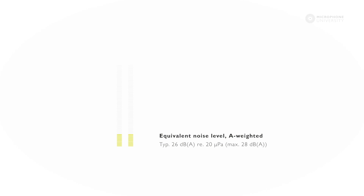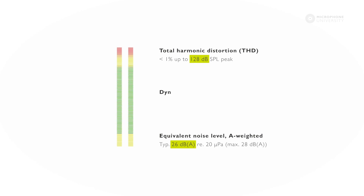If you don't know the maximum level of the voice you are working with, you have to make sure that your microphone can handle really high sound pressure levels, like this 6066. The lower limit of the microphone's working range is the microphone's self noise at 26 dB, and the upper limit is the distortion level of the microphone at 128 dB. This area is called the dynamic range of the microphone — with this microphone it's 102 dB.